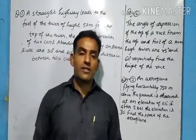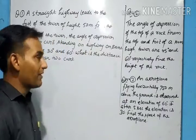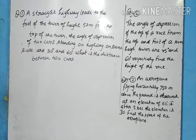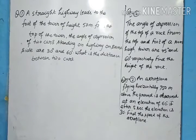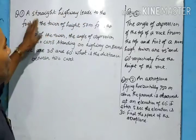Good morning dear students. Once again, some more questions on height and distance for Class 10. The first question is: a straight highway leads to the foot of a tower of height 50 meters. From the top of the tower, the angles of depression of two cars standing on the highway on the same side are 30 degrees and 60 degrees. What is the distance between the two cars?